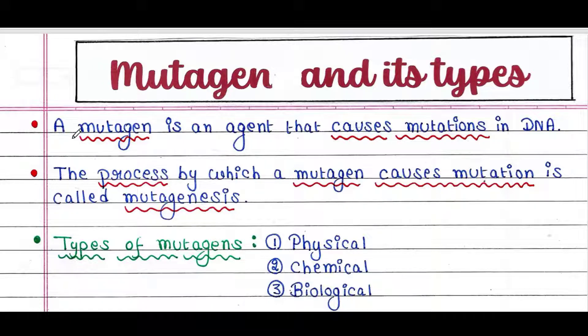A mutagen is an agent that causes mutations in DNA. The process by which a mutagen causes mutation is called mutagenesis.